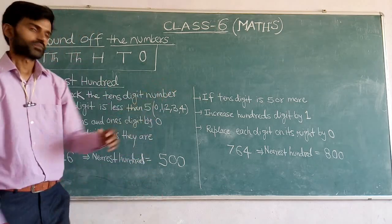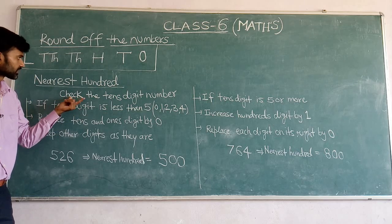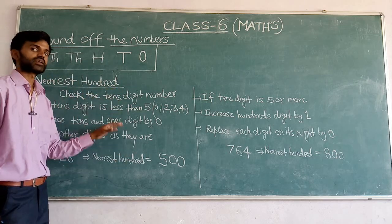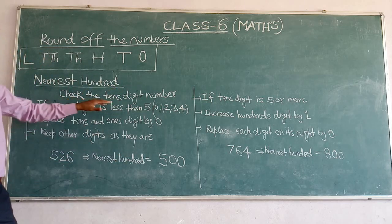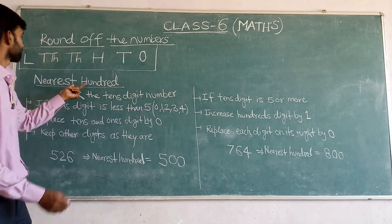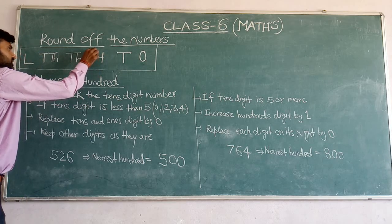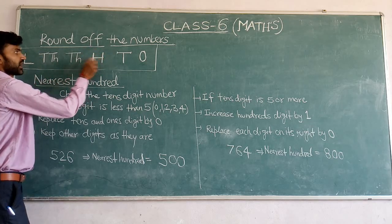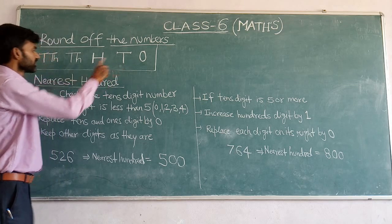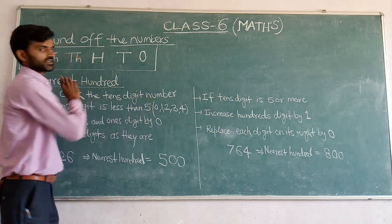The next step is finding the nearest 100. This is the rule for finding the nearest 100. Check the tens digit number of the given value.